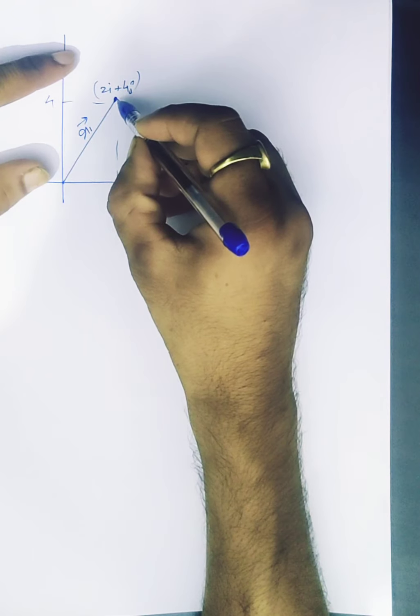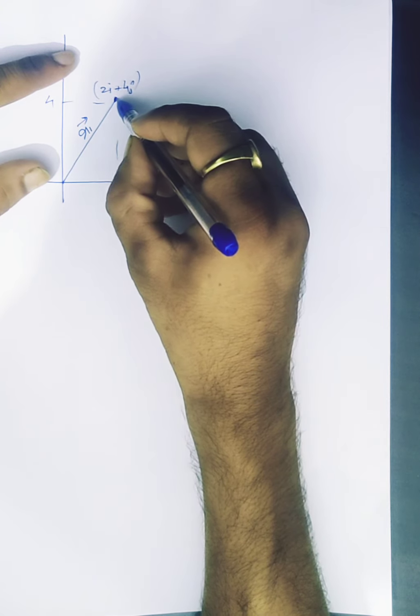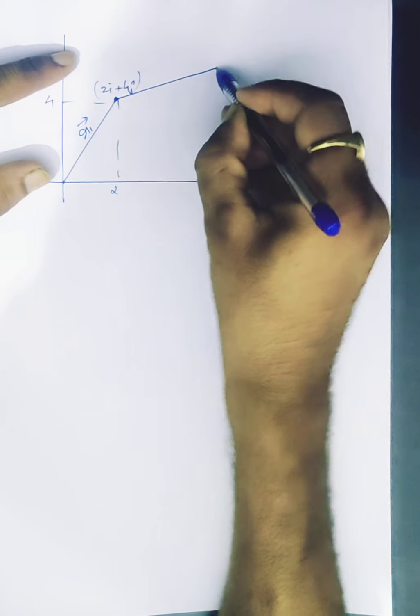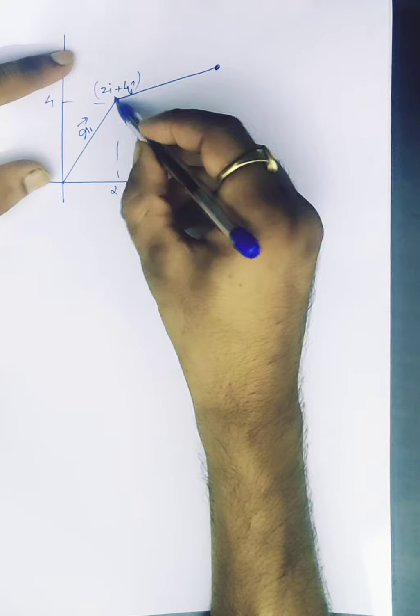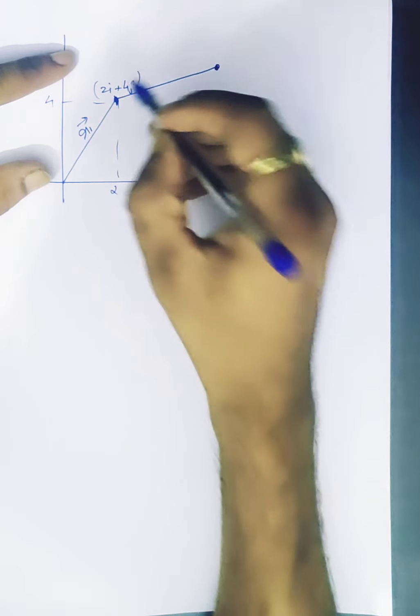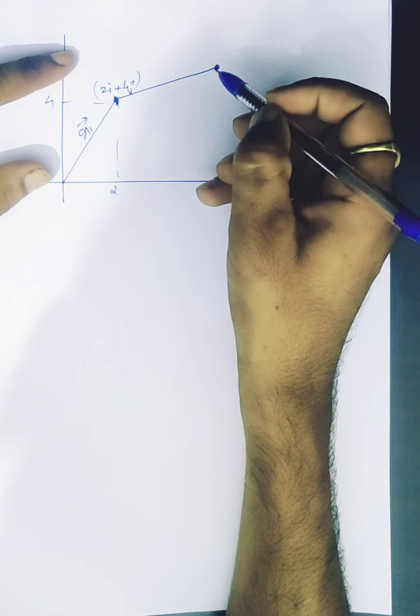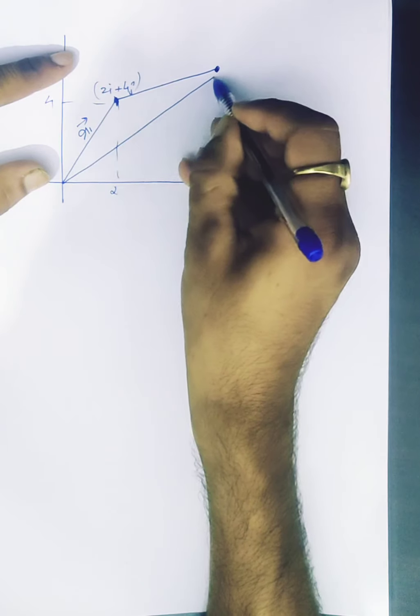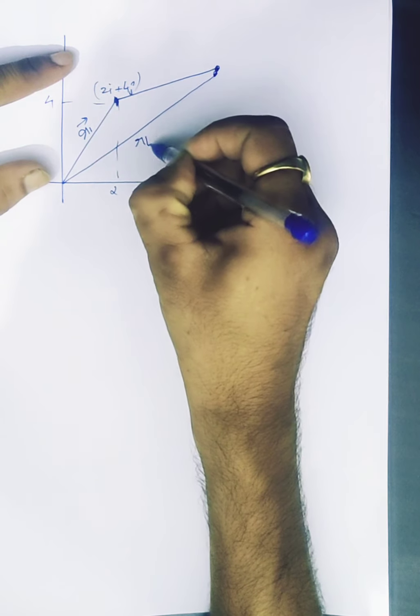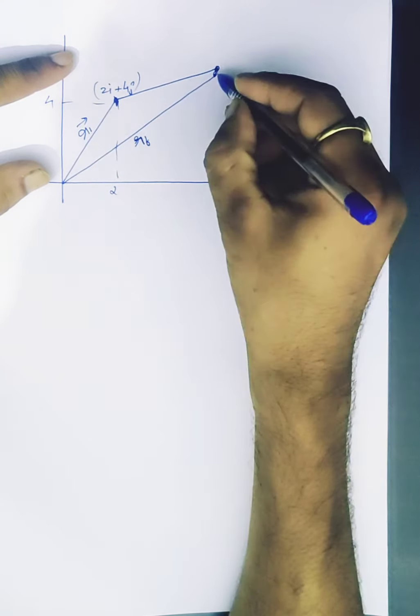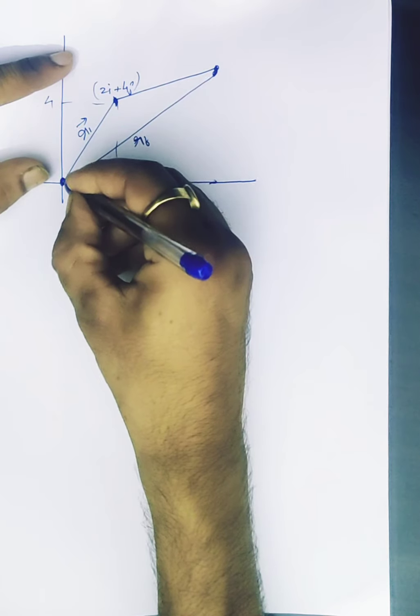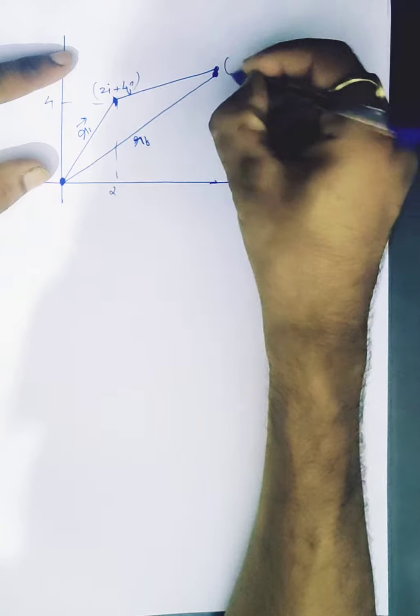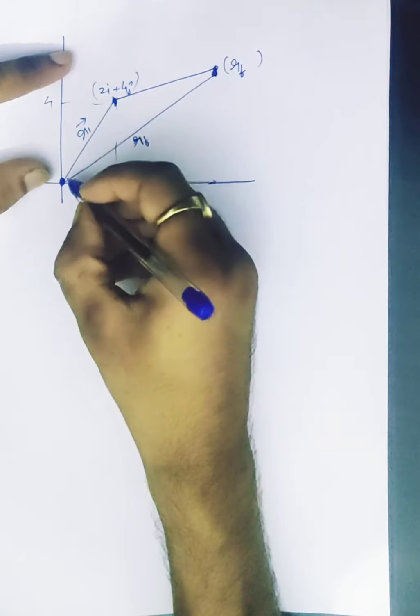18i plus 16j is a displacement here. This is our final position. This is our origin. This is our final position which we don't know. This is our starting point.